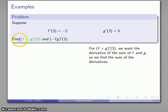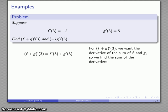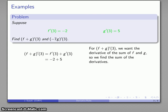I could try to find the derivative by hand as we did before, but now that I have information about the derivatives of these functions, I can use my derivative properties. For the first expression, the derivative of f plus g at 3: the derivative of a sum is the sum of the derivatives. I have f prime of 3 and g prime of 3 available, so I substitute those values in and have my derivative of the sum.